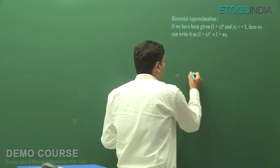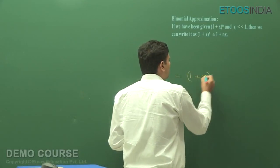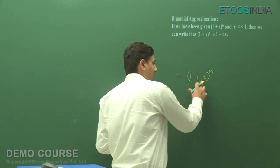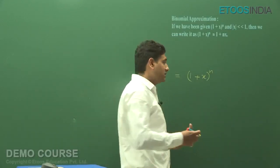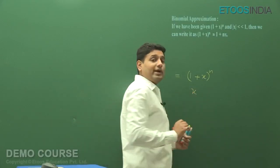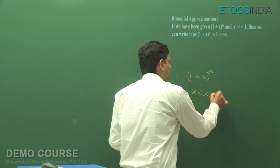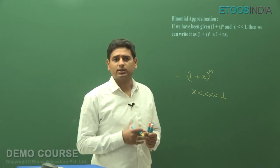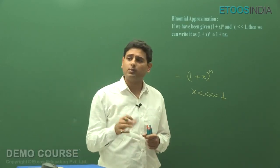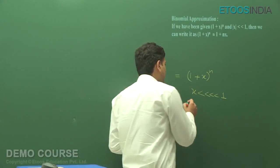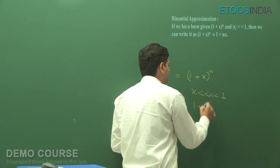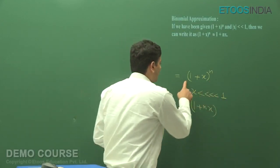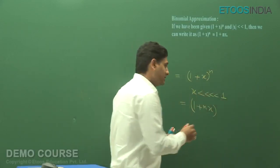As I was telling you, suppose that the value of x is very small compared to 1 — that means something like 0.0001. In that case, (1 + x)^n can be approximated as 1 + nx.